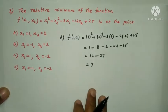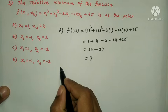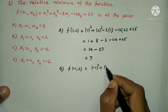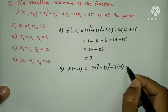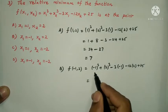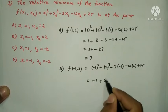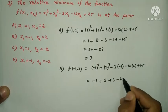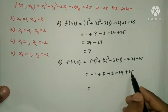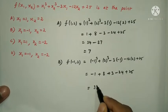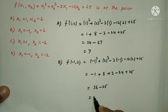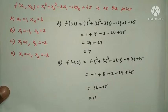Option A point gives value 7. Option B: substitute x1=-1, x2=2. f(-1,2) = (-1)³ + 2³ - 3(-1) - 12(2) + 25 = -1 + 8 + 3 - 24 + 25 = 11. Option B gives value 11.